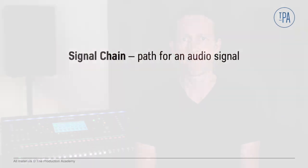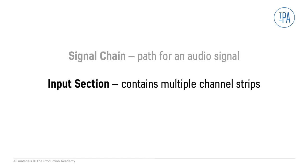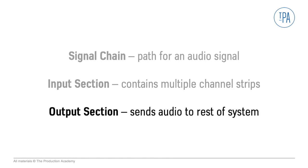In this video we talk about the concept of a signal chain, which is the path for an audio signal. Then we discuss how consoles have an input section, which contains multiple channel strips, and an output section which sends audio to the rest of the system.